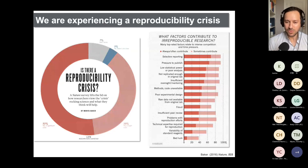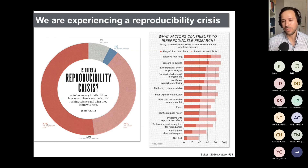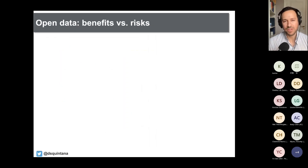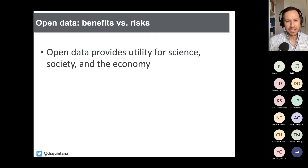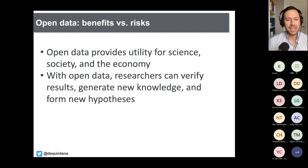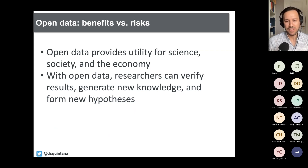We're having a lot of issues with irreproducible research. Researchers have been surveyed about what they believe to be the important factors that contribute to reproducible or irreproducible research. One thing I want to talk about is not having your data available, because not being able to actually replicate what people have reported is a very important part of how we tackle reproducibility. There are various considerations for open data — firstly, there are a lot of benefits. Open data provides a lot of utility for science, society, and the economy.